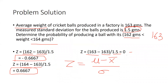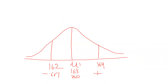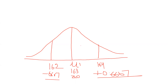The z value for 162 grams is minus 0.6667 on the left, and the z value for 164 grams is positive 0.6667 on the right. These are our confidence interval limits, and in that way we can define what is our acceptance region and what is our rejection region.